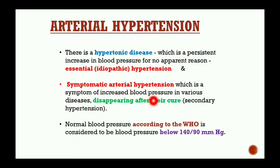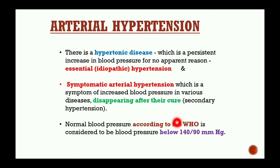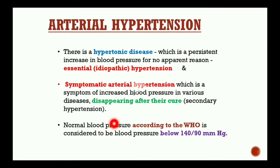With symptomatic hypertension, if we cure the underlying cause, the hypertension will disappear. It is important to know that normal blood pressure is 120/80. However, according to WHO, blood pressure up to 140/90 is still considered within the normal range.